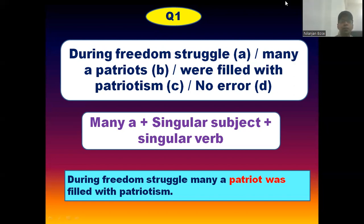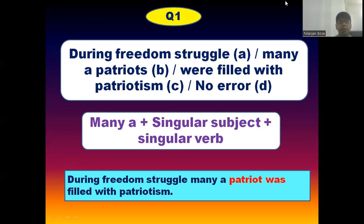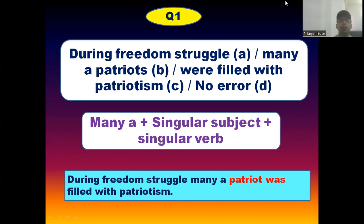In a sentence, if you find 'many a,' it should always be followed by a singular subject and singular verb. Just keep in mind: if you find 'many a' in a sentence, your subject should be singular and your verb should be singular. Going through the question, I will find that in section B it is written 'many are patriots,' which is wrong. It should be 'many a patriot.'